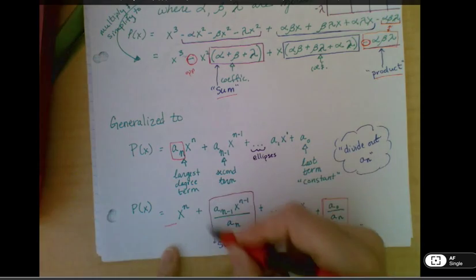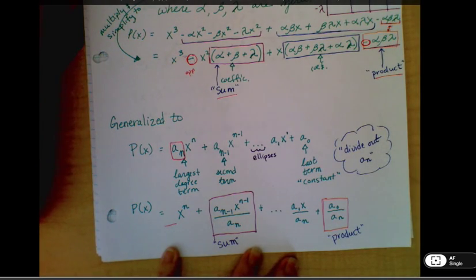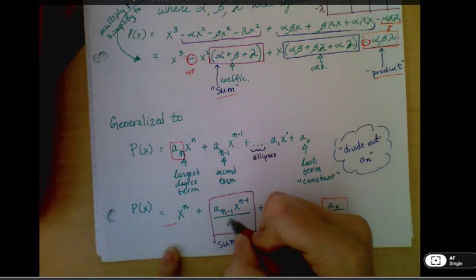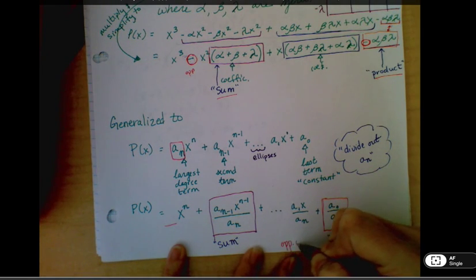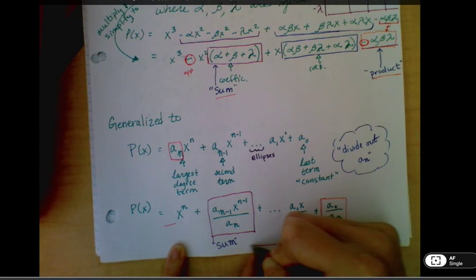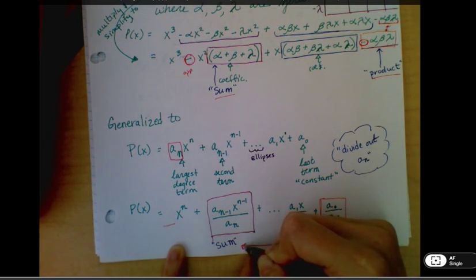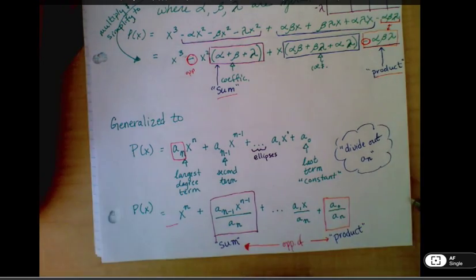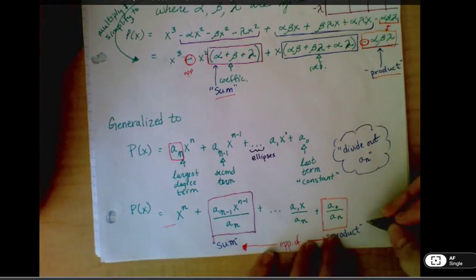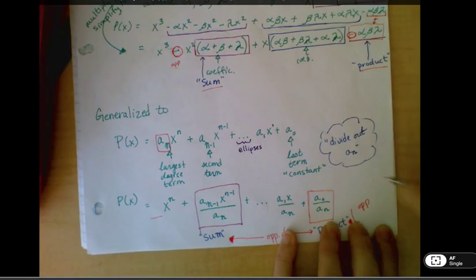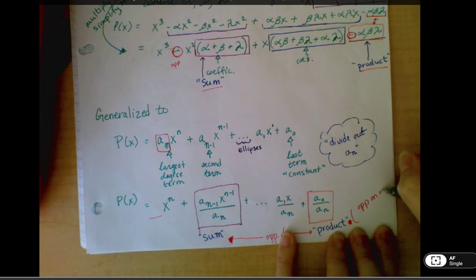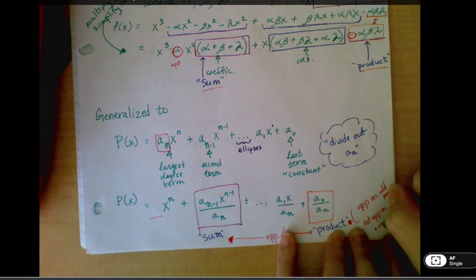So this term right here is going to be our sum, and this one right here is our product. And again, these are both opposite of. So it's opposite on odd power, and I guess we just write that as not opposite on even power.